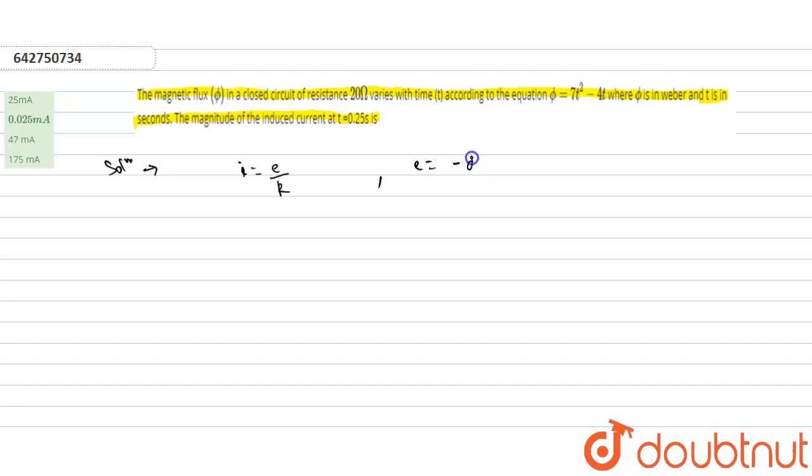So phi is given to us as 7t square minus 4t, so we will differentiate it with respect to t.